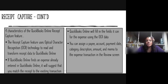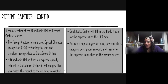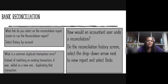Four characteristics of the QBO receipt capture feature: one, it uses optical character recognition (OCR) technology to read and transform receipt data into QBO; two, if QuickBooks Online finds an expense already entered in QBO, it will suggest you match the receipt to the existing transaction; three, QBO will fill in the fields it can for the expense using the OCR data; and four, you can assign a payee, account, payment date, category, description, amount, and memo to the expense transaction in the review screen.